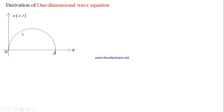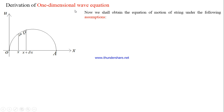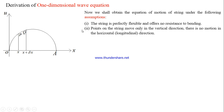Let us consider an element PQ of length Δx such that OP equals x and OQ equals x plus Δx. The following assumptions will help us in deriving the one-dimensional wave equation. Assumption one: the string is perfectly flexible and offers no resistance to bending. Assumption two: points on the string move only in the vertical direction, with no motion in the horizontal direction. Note that vibration is in the vertical direction but energy moves in the horizontal direction. Assumption three: gravitational forces on the string are neglected.